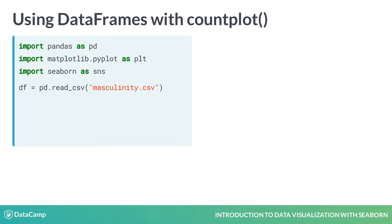To create a countplot with a Pandas DataFrame column instead of a list of data, set X equal to the name of the column in the DataFrame. In this case, we'll use the How Masculine column. Then we'll set the data parameter equal to our DataFrame, DF.